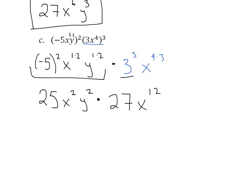Now, using what we learned in the last video, how are we going to combine these? Well, you're going to multiply the 25 and the 27. So 25 times 27 is 675.